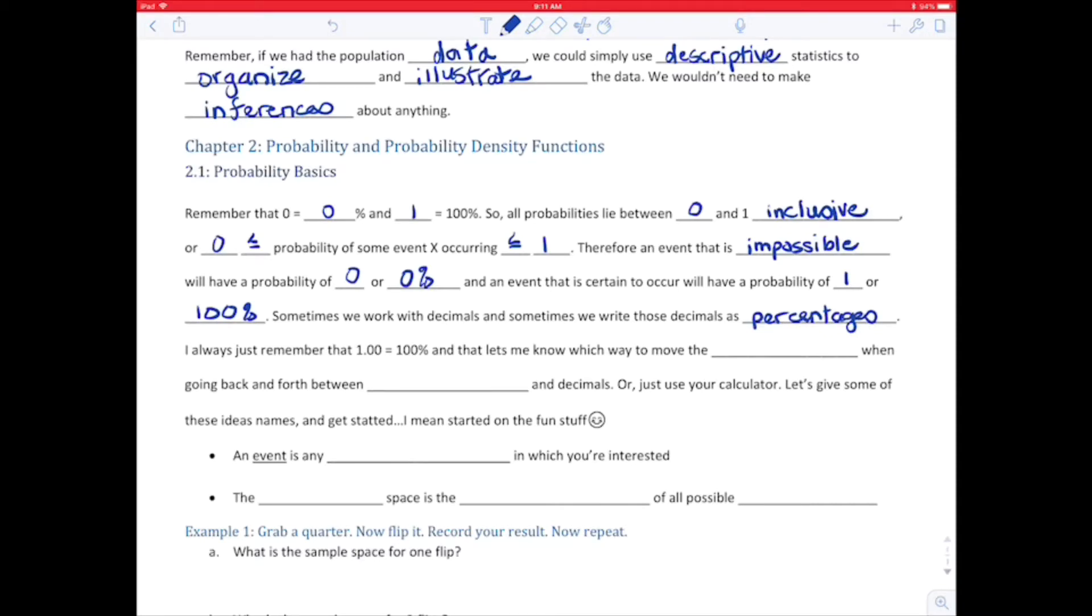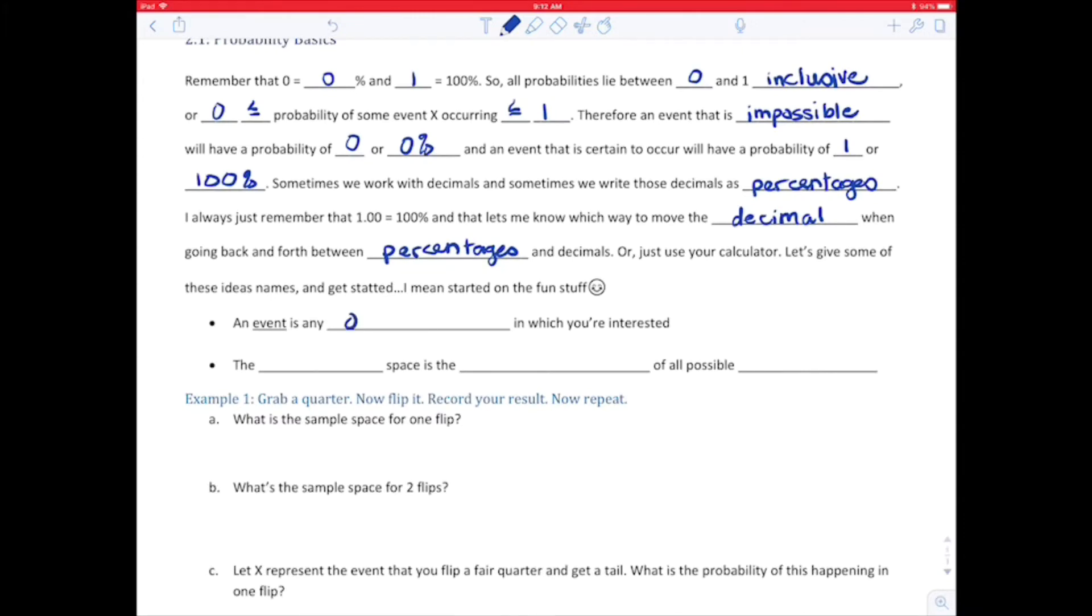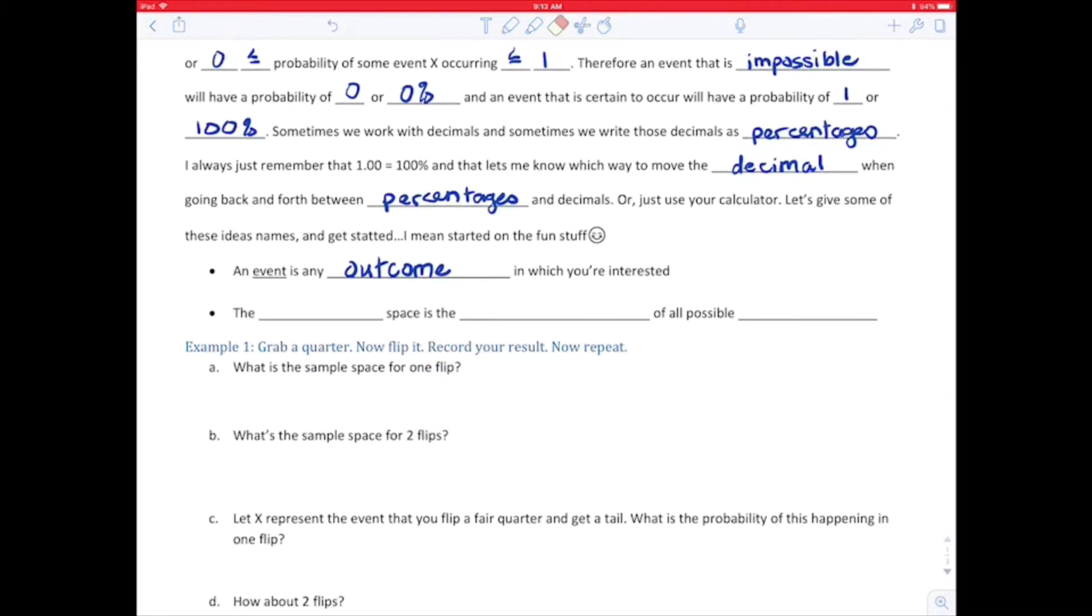Sometimes we work with decimals and sometimes we write those decimals as percentages. I always just remember that 1.00 equals 100% and vice versa, and that lets me know which way to move the decimal when going back and forth between percentages and decimals. Or, just use your calculator. Let's give some of these ideas names and get started on the fun side. An event is any outcome in which you're interested. The sample space is the collection of all possible outcomes.